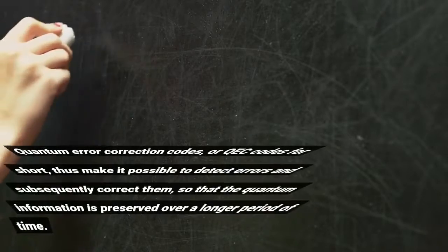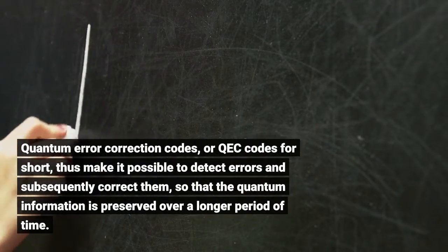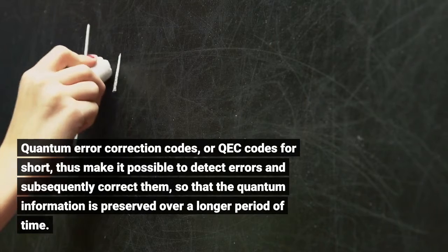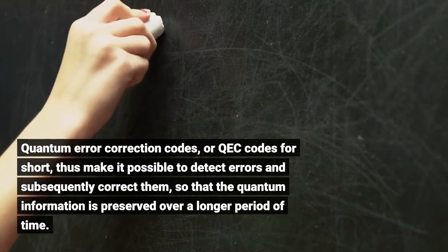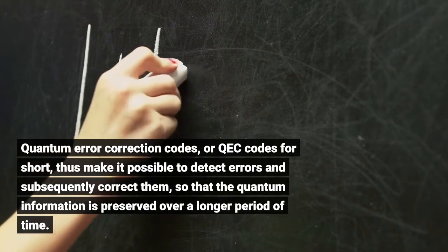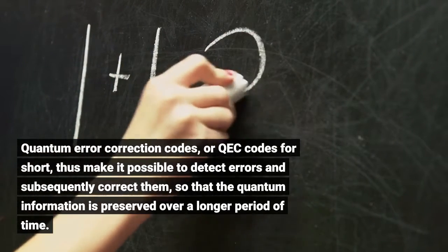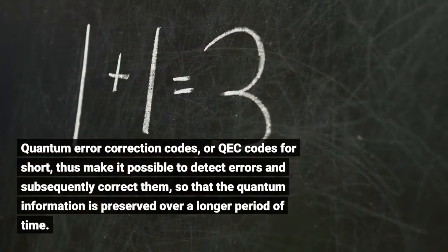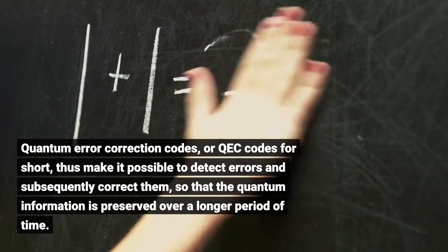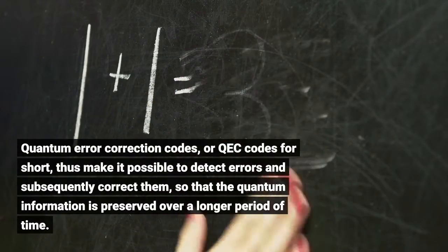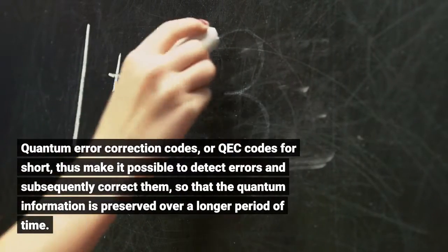Quantum error correction codes, or QEC codes for short, make it possible to detect errors and subsequently correct them, so that the quantum information is preserved over a longer period of time.